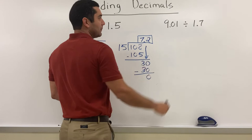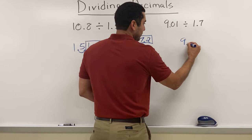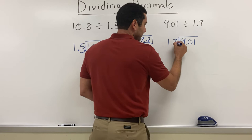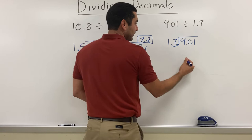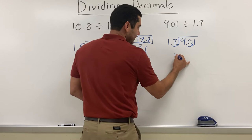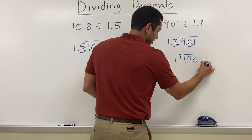In this example, we have 9.01 divided by 1.7. So again, 9.01 goes on the inside, 1.7 on the outside. Can't have a decimal on the outside, so I'm going to move it one space to the right. I have to do the same thing on the inside. So now I'm going to have 17 dividing into 90.1.